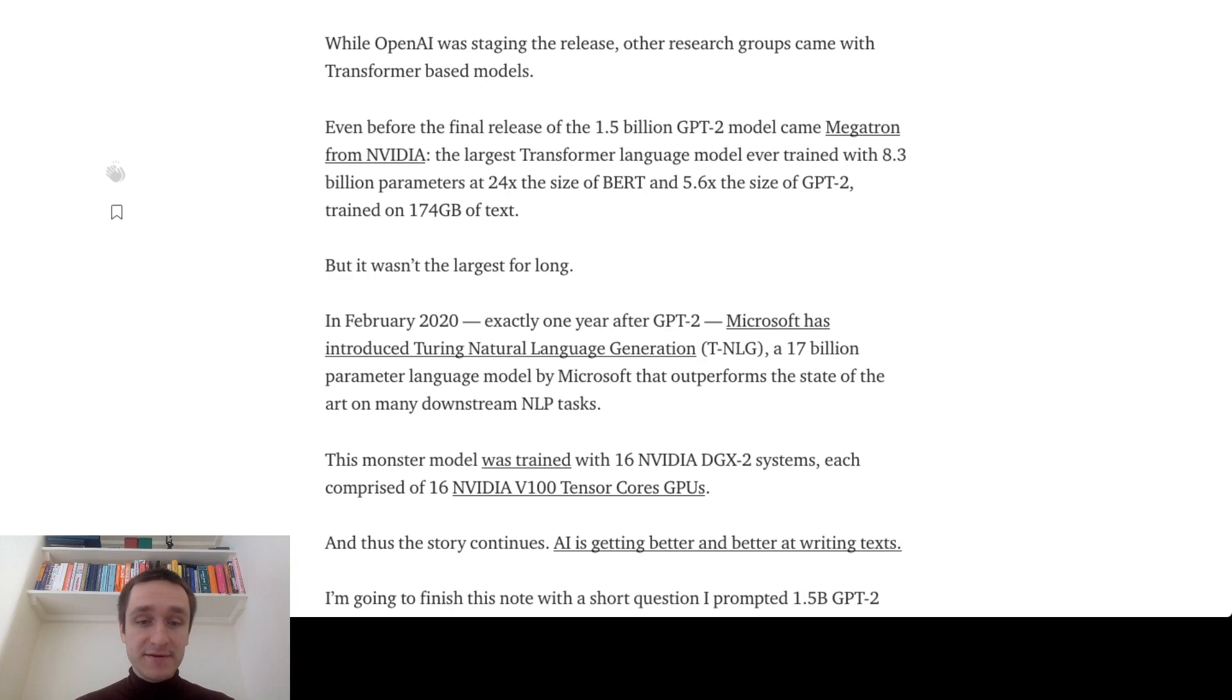Then, three months ago, in February 2020, exactly one year after GPT-2, Microsoft introduced Turing Natural Language Generation model. That was a 17 billion parameter language model.